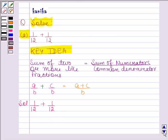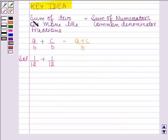By the key idea we know that sum of 2 or more like fractions is equal to sum of numerators upon common denominator. So this means 1 by 12 plus 1 by 12 is equal to 1 plus 1 upon 12, and this gives us 2 by 12.